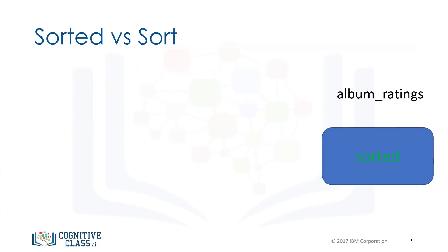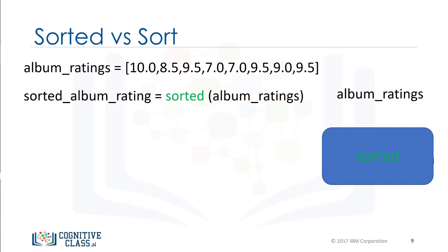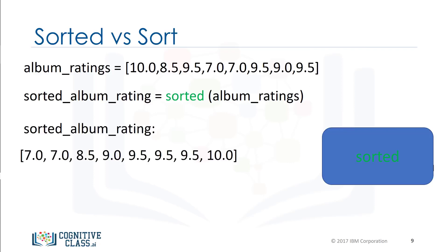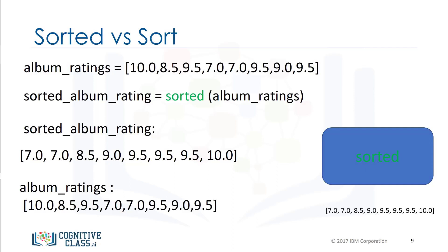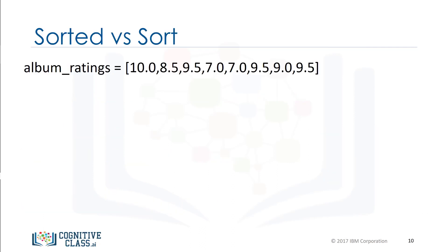There are two ways to sort a list. The first is using the function sorted, and we can also use the list method sort. Methods are similar to functions. The function sorted returns a new sorted list or tuple. Consider the list album_ratings. We can apply the function sorted to album_ratings and get a new list sorted_album_rating. The result is a new sorted list; if we look at album_ratings, nothing has changed. Generally, functions take an input — in this case a list — and produce a new output, in this instance a sorted list. If we use the method sort, the list album_ratings will change and no new list will be created.